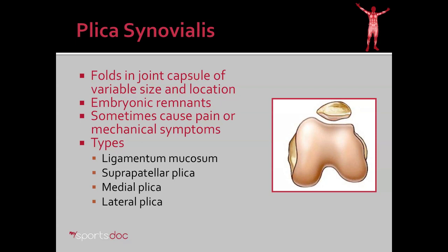The four main types of plica in the knee are the ligament mucosum, the suprapatellar plica, medial plica, and lateral plica. On this diagram to the right, we have a representation of the medial plica, and this is one of the most common you hear about because it is most commonly problematic. You can see why — it can become entrapped between the kneecap and the trochlea and cause mechanical symptoms or pain.